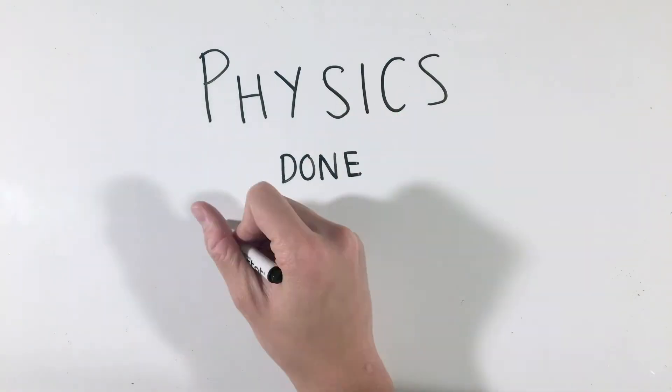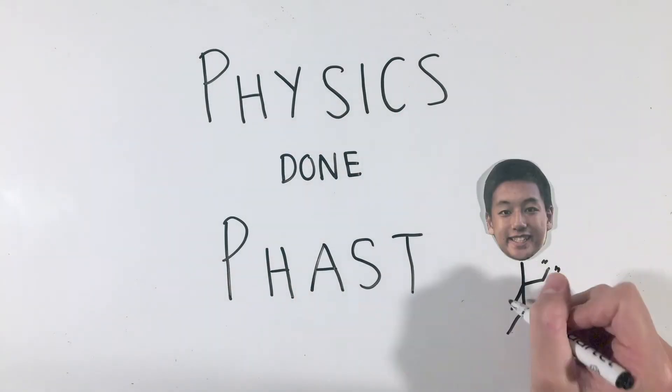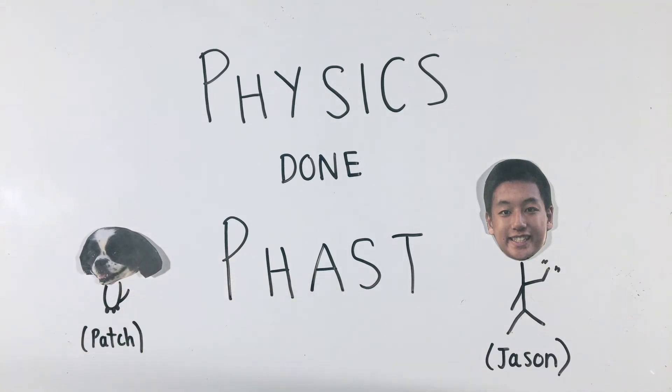While we've probably all seen a pendulum swinging back and forth, or a fishing bob move up and down, how do we use physics to describe this motion?